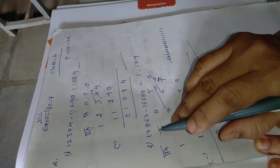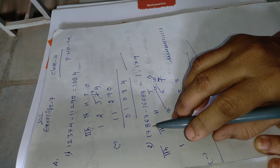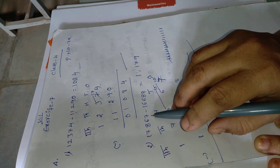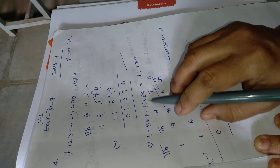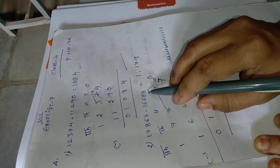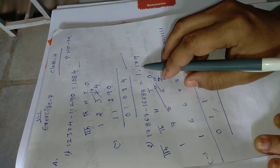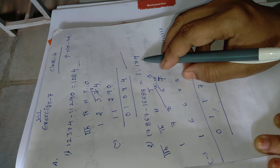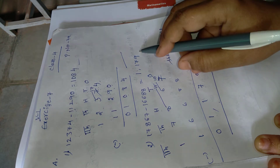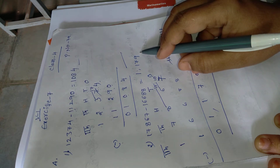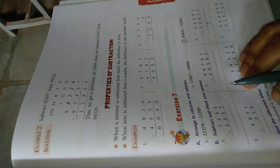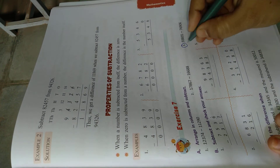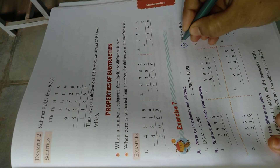So what is the difference? 17,867 minus 16,688 equals 1,179. Understood, all of you? Next, the third problem, you do as homework.